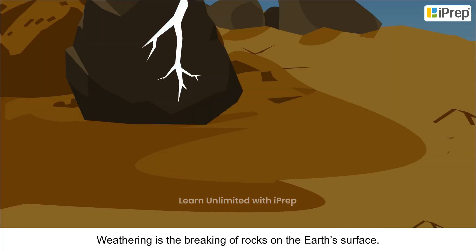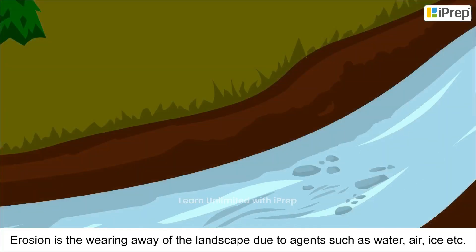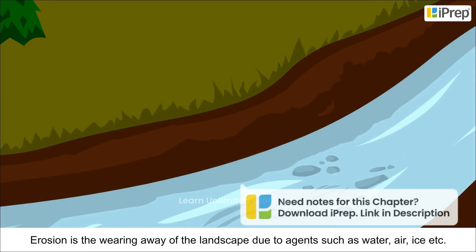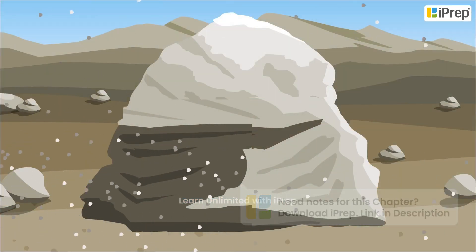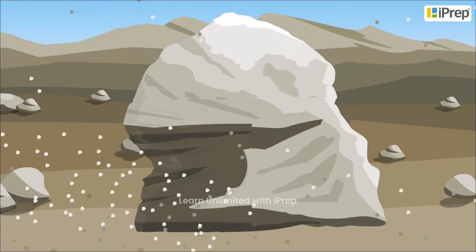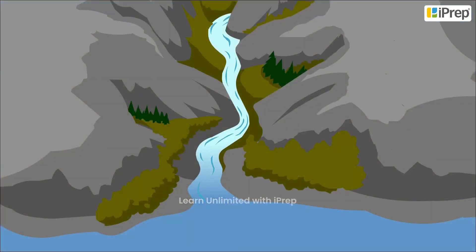Weathering is the breaking of rocks on the earth's surface. Erosion is the wearing away of the landscape due to agents such as water, air, ice, etc. In both cases, water or wind carry away the broken or eroded particles and deposit them elsewhere, thus changing the landscape.